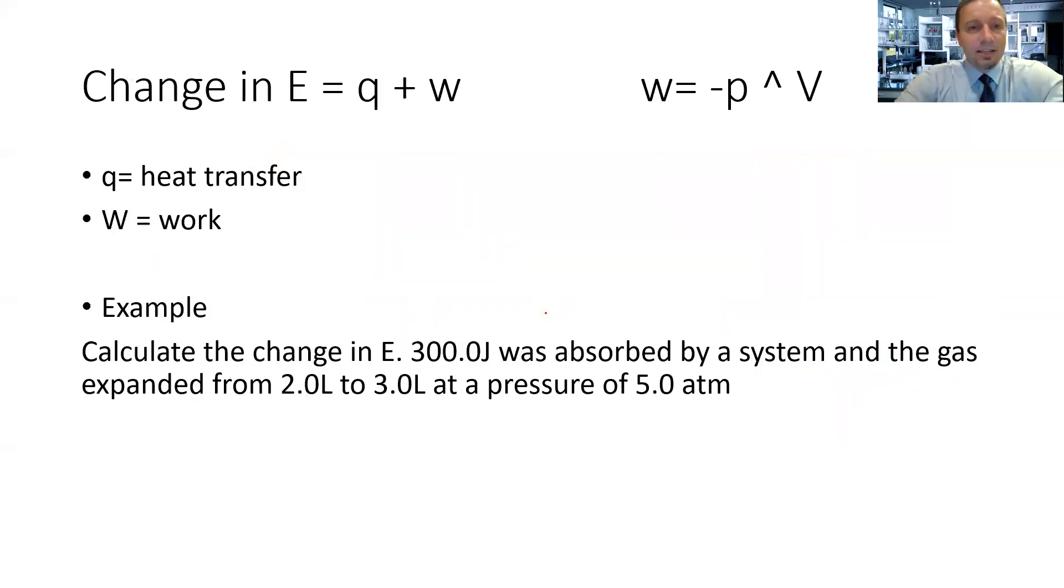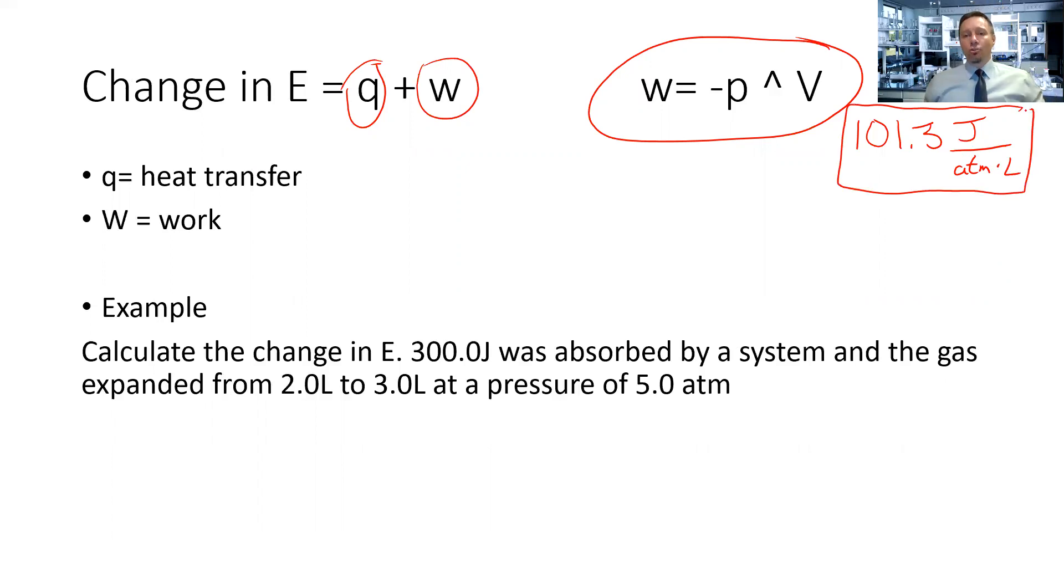Here are some examples. We have change in energy: ΔE = q + w. Q is heat transfer, and W is work. We have a formula that is very useful: w = -PΔV. Then we can do a conversion, which is 101.3 joules per atmospheres times liters. This is a conversion unit that we had learned about previously. This formula here is very useful.